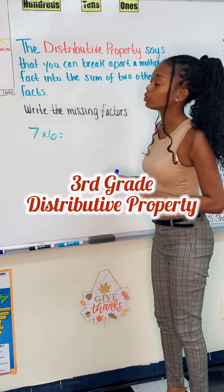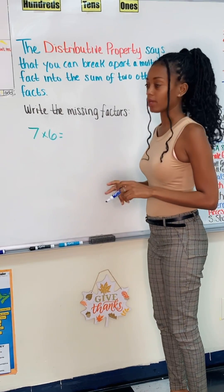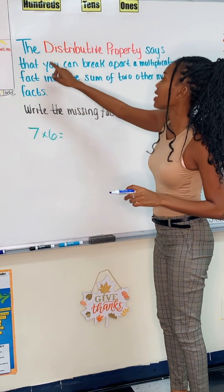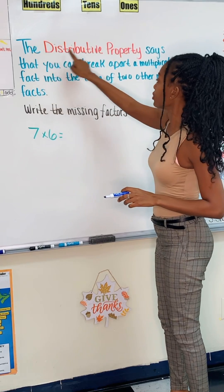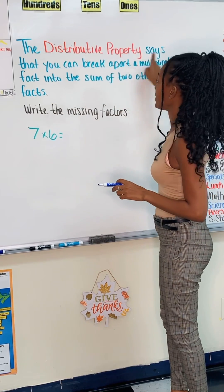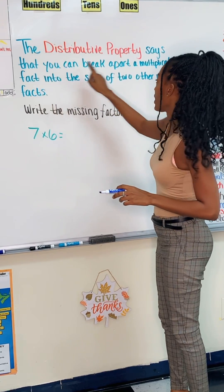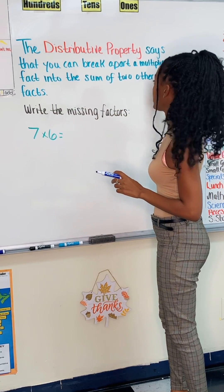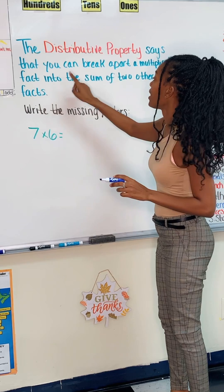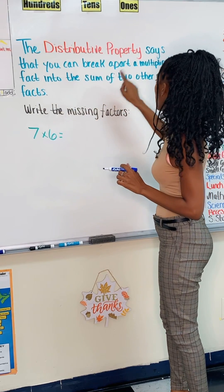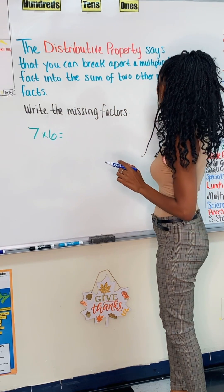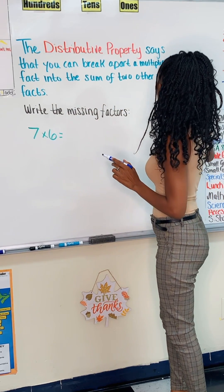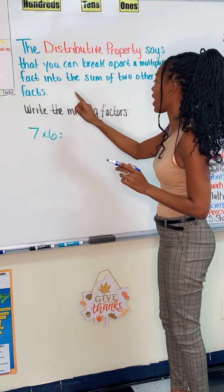Let's look at the distributive property. The distributive property says that you can break apart a multiplication fact into the sum of two other multiplication facts.